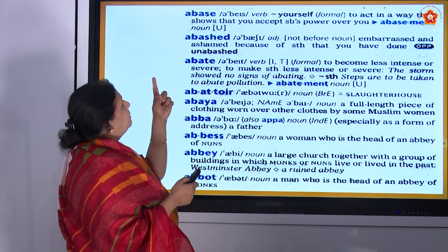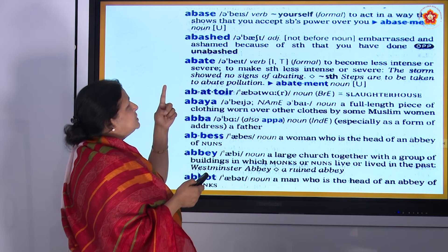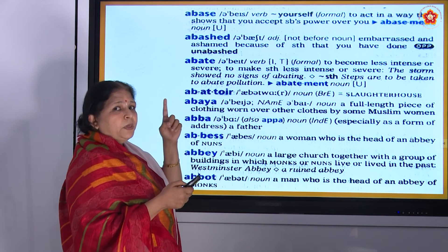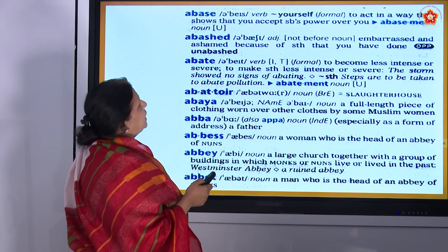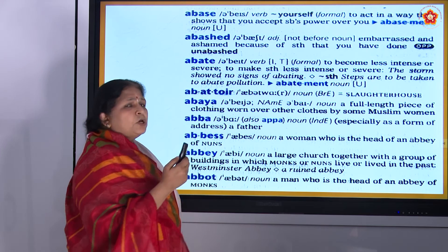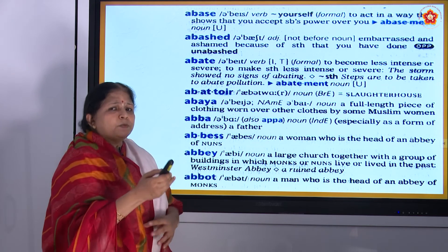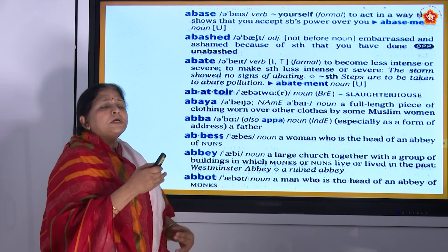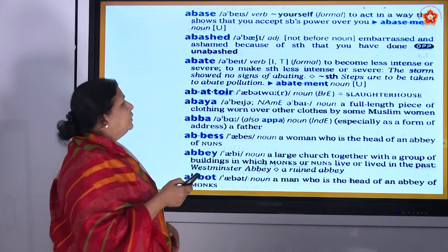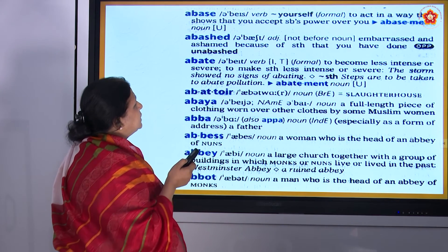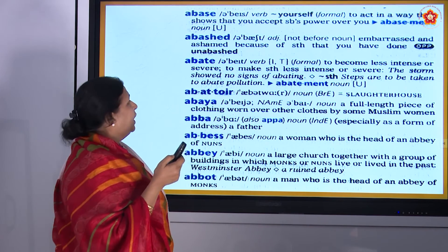Then we have 'Abase' — A, B, A, S, E — abase. First you will find it difficult, but keep on looking. See, it is going alphabetically, and then it will go chronologically also, that is in numbers.